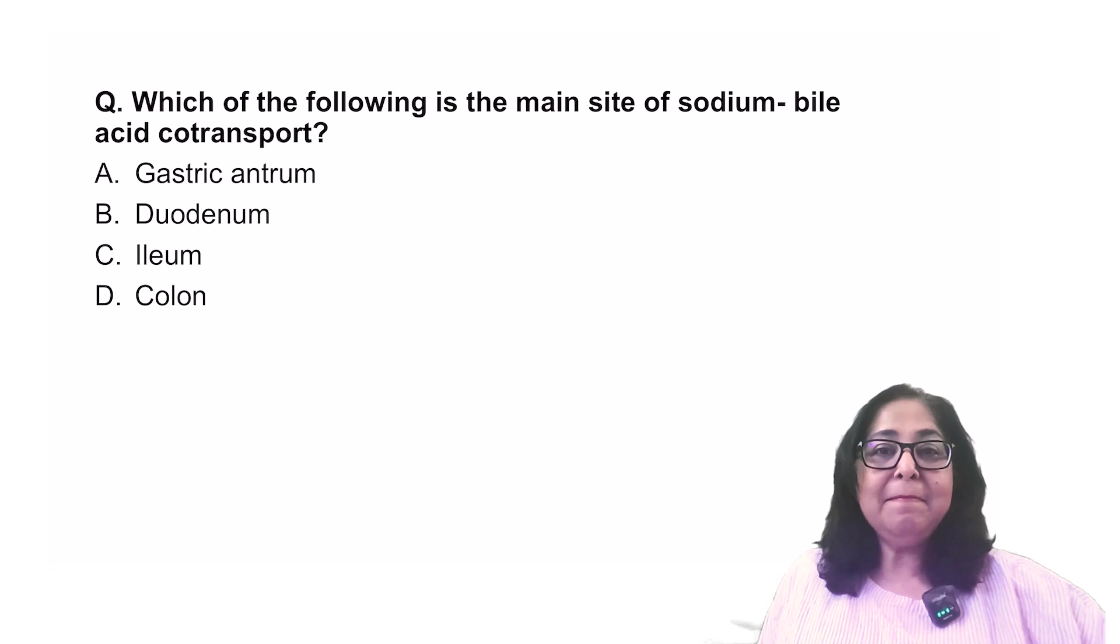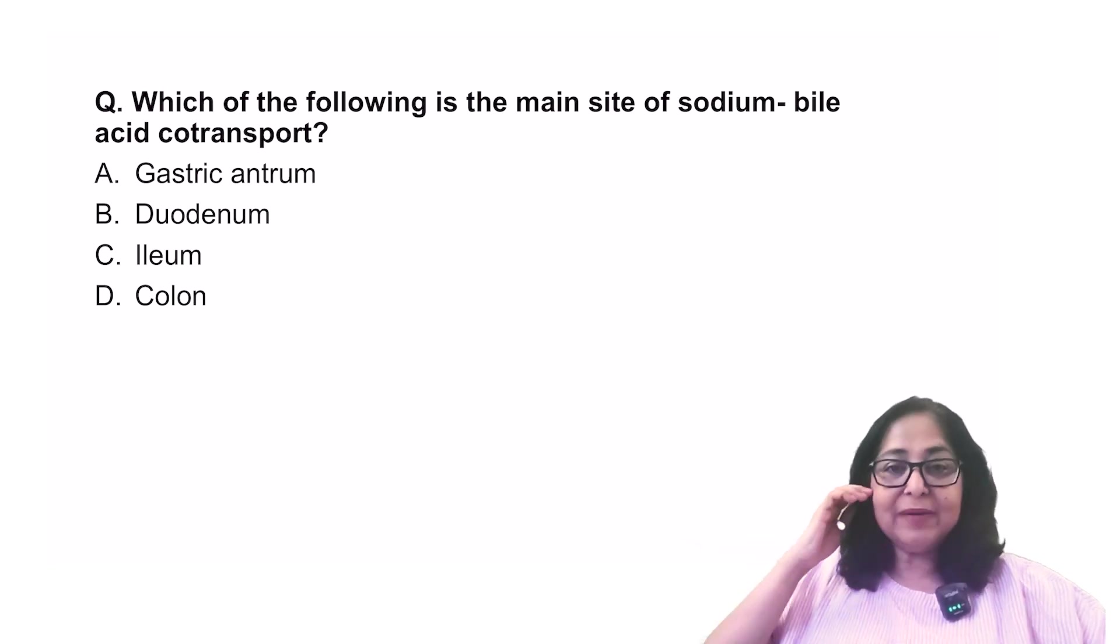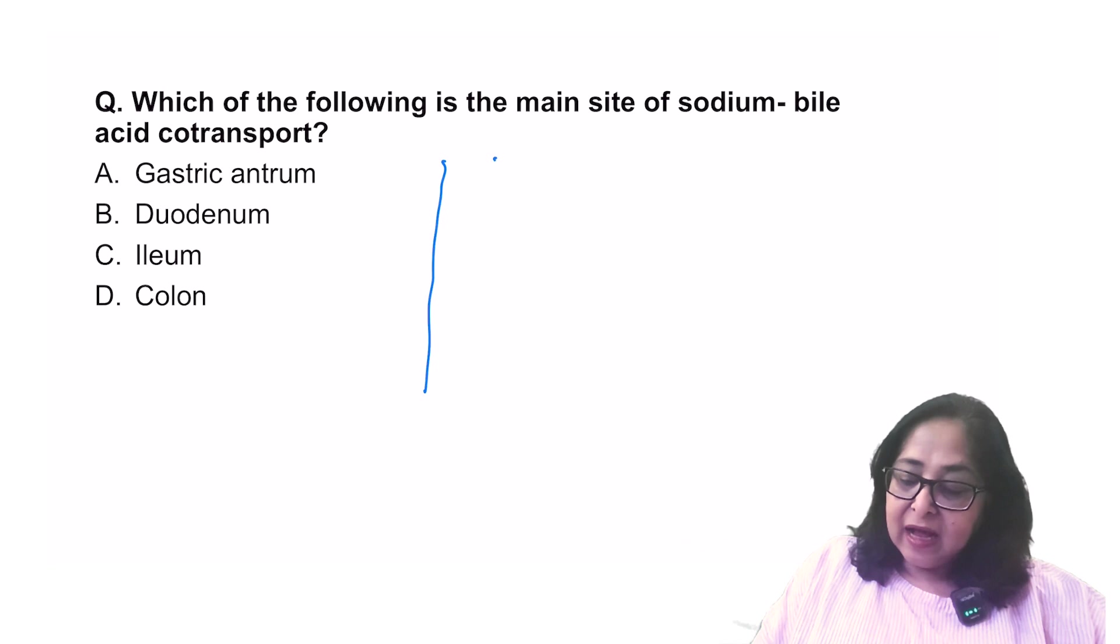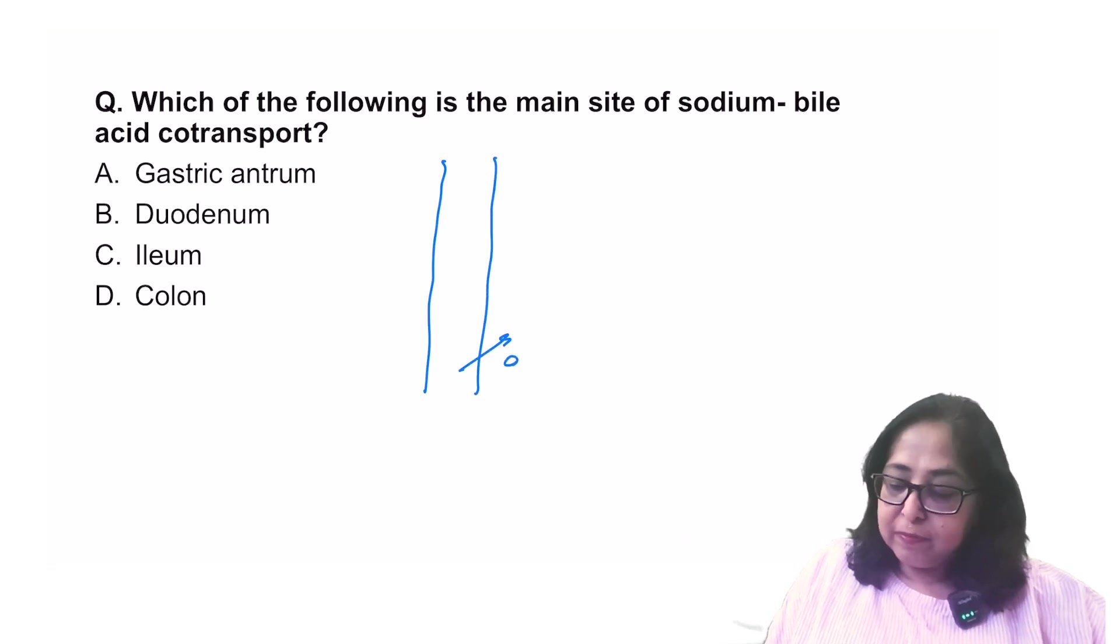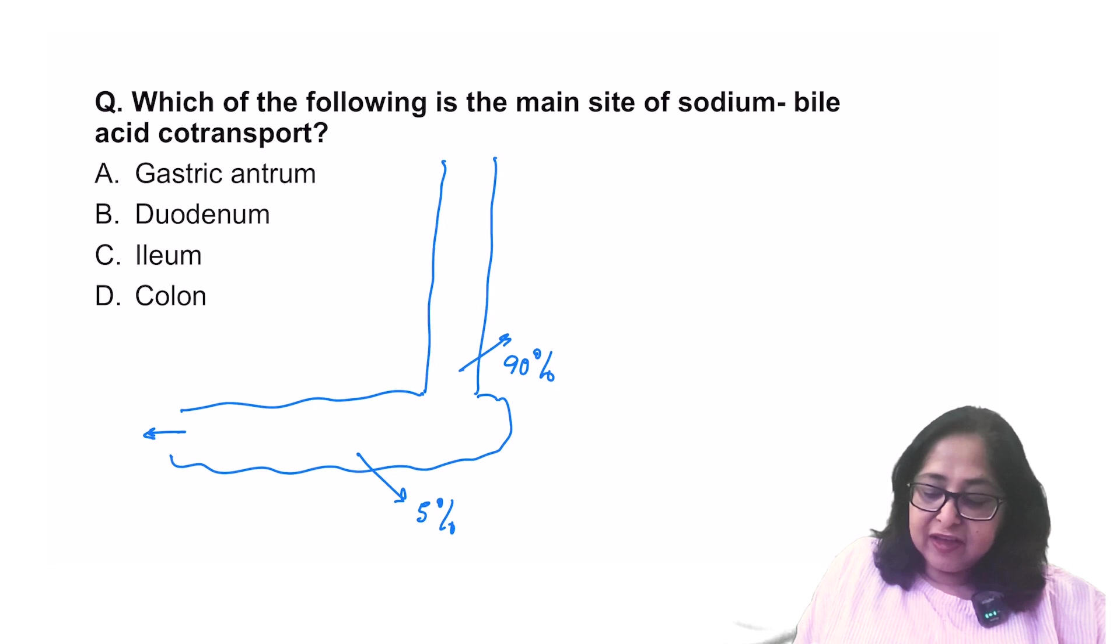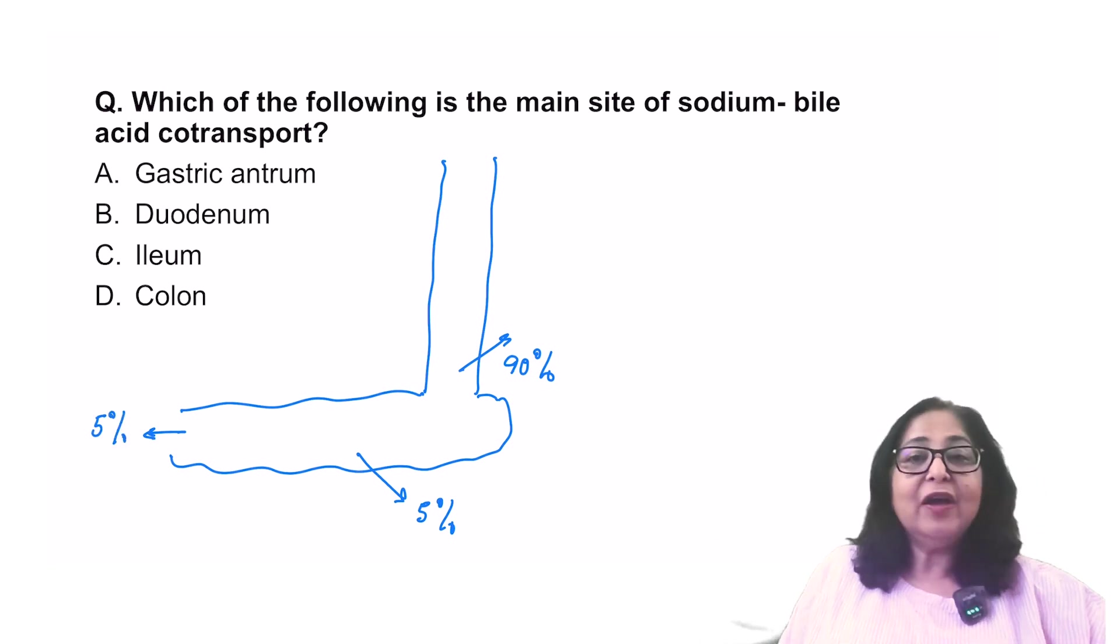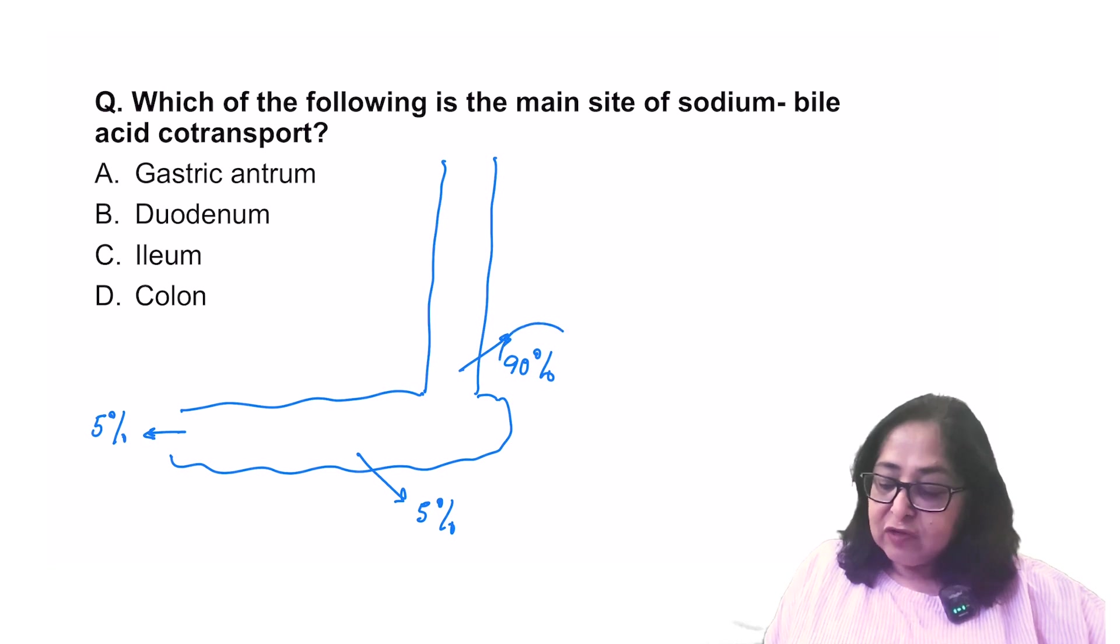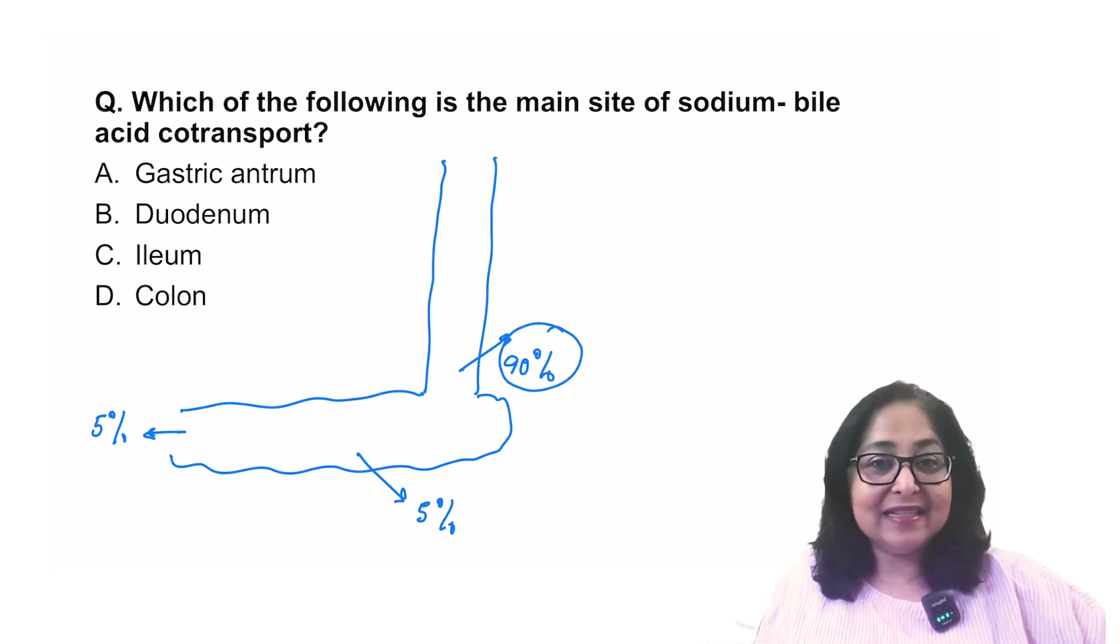It says, which of the following is the main site for sodium bile acid co-transport? The bile acids, 90% of the bile acids are absorbed from the distal ileum. 5% of the bile acids are absorbed from the colon and 5% of the bile acids will be lost in the stool. So the major site of absorption of bile acids is the distal ileum.